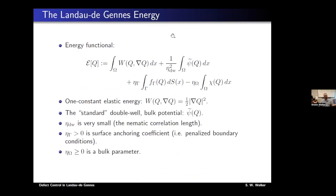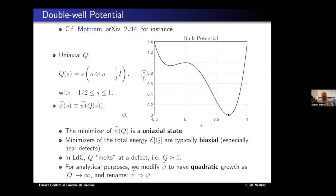We have this order parameter Q and we're looking for energy minimizers or doing a gradient flow of an energy. The energy has an elastic energy term W — we'll take the one-constant or Dirichlet energy for now, though more general versions are possible — a double-well term, a surface anchoring term giving a Robin-type boundary condition, and a right-hand side forcing term.